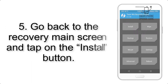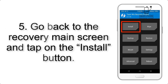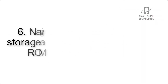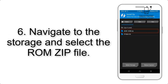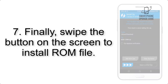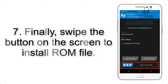Step 5: Go back to the recovery main screen and tap on the Install button. Step 6: Navigate to the storage and select the ROM zip file. Step 7: Finally, swipe the button on the screen to install the ROM file.